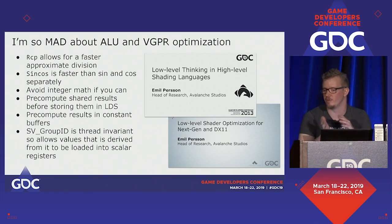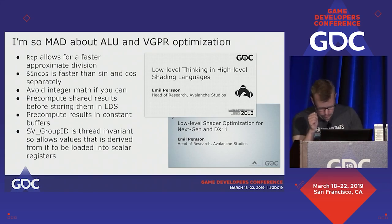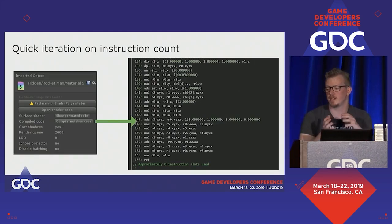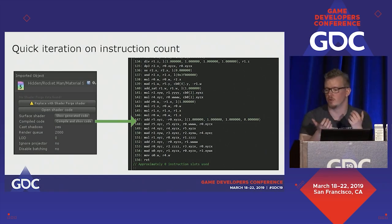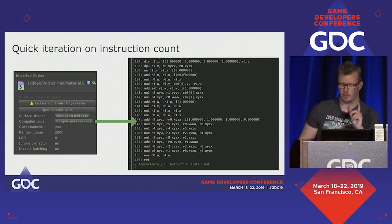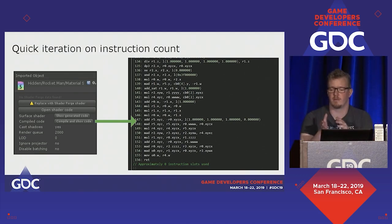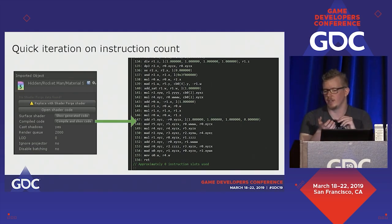A nice feature in Unity is that you can see the generated bytecode by finding the shader in the editor and clicking a button. This lets you compare if changes to your shader actually change the instruction count — which, when a build takes maybe 20 minutes, can save a lot of time. On some platforms you can also use platform-specific defines to nudge the compiler to optimize your shader in different ways; it's not available on everything, but for consoles it can be a benefit.